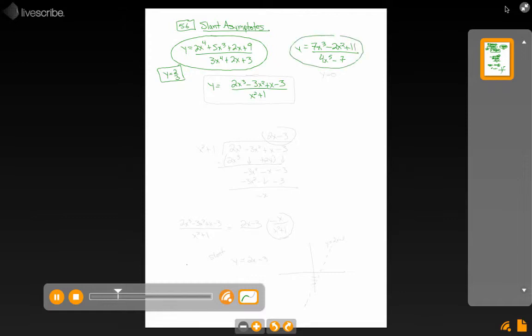The second one, the degree in the bottom in the denominator exceeds the one in the numerator, and so if you try doing the limit as x goes to infinity of that, you get y equals 0. You've got a horizontal asymptote again because the bottom degree exceeds the top degree.